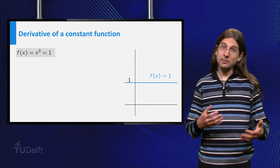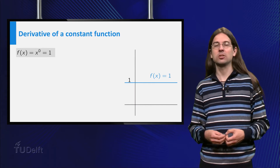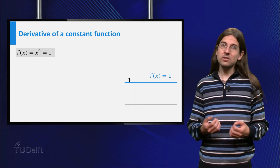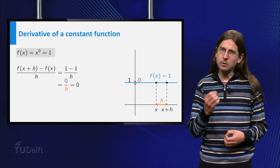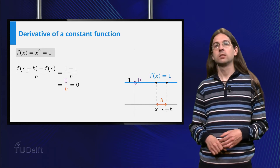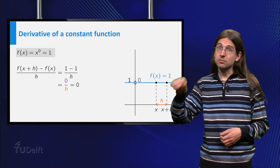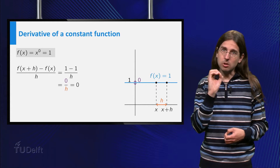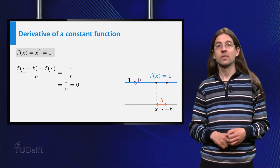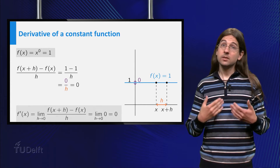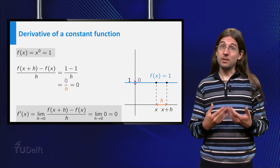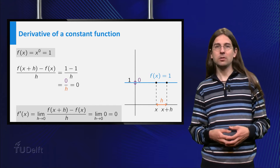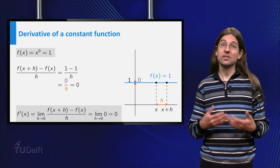We start with the case f equals x to the power zero, which is 1. The derivative is the limit of the value of the difference quotient for very small values of h. As you can see the graph is horizontal, so it should come as no surprise that the difference quotient is zero for all values of h. This difference quotient equals zero in the limit as h becomes very small. Thus the derivative of the constant function 1 equals zero.